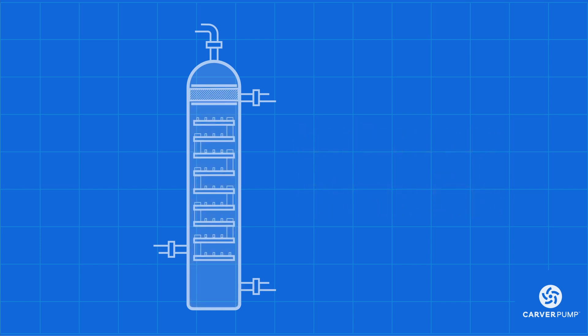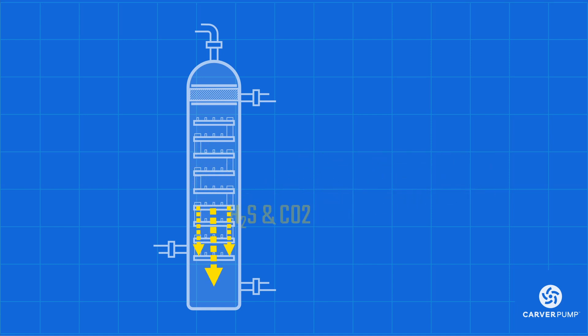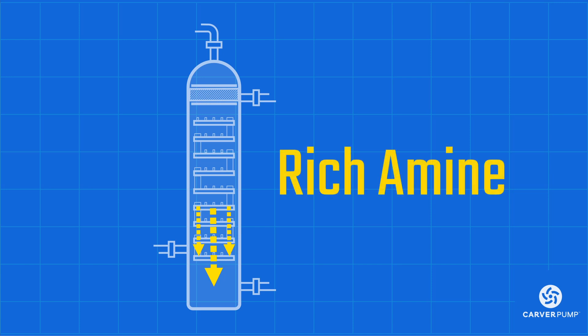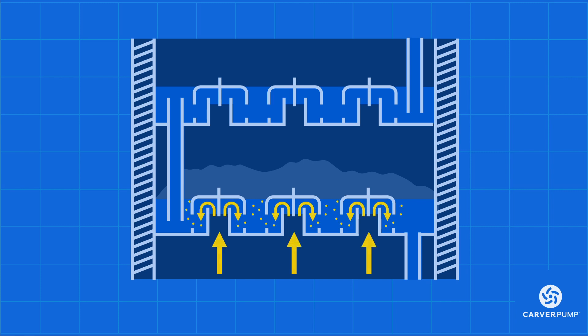At this stage, the sour gas has now turned into sweet gas and is ready for sale or further processing. Meanwhile, the liquid amine solution enters the column from the top and collects H2S and CO2 as it makes its way downwards. By the time it reaches the bottom, it is already full of these acid gases and is known as rich amine.